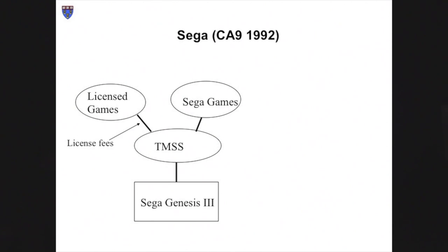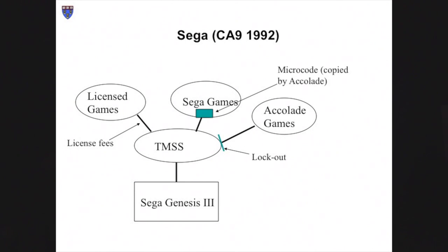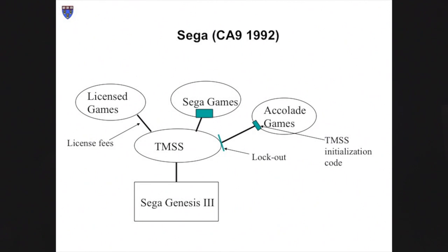The Sega case involved the second of these approaches. Sega manufactured game consoles including operating systems, with a small piece consisting of a lockout program. Sega's own games, as well as those by licensed manufacturers, included the key necessary to open the lock. The defendant, Accolade, wished to manufacture games compatible with the Sega system without obtaining a license or paying fees. To do this, Accolade engineers made copies of significant portions of Sega's software, used decompilers to ascertain the crucial source code, and included the essential bit in its own games, rendering them compatible with the Sega system.